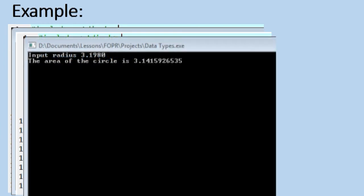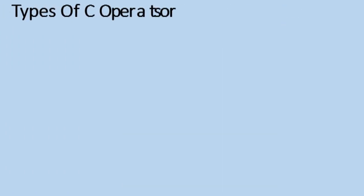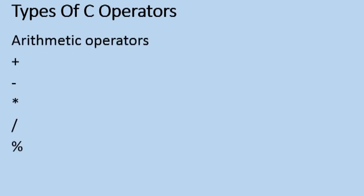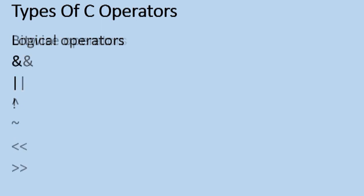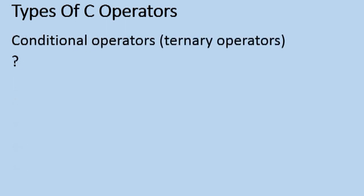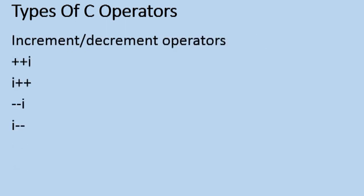So that ends our introduction to C data types. Next meeting, we will talk about types of C operators, such as arithmetic operators, assignment operators, relational operators, logical operators, bitwise operators, conditional or ternary operators, increment and decrement operators, and special operators. See you next week!